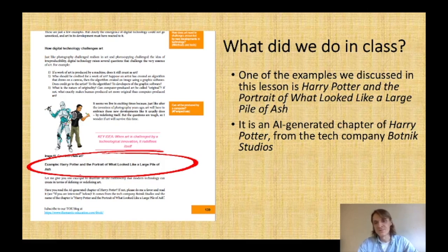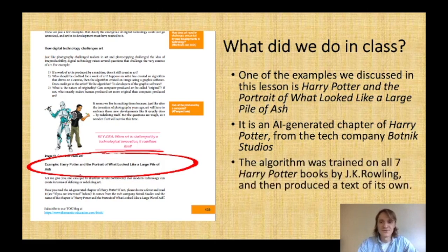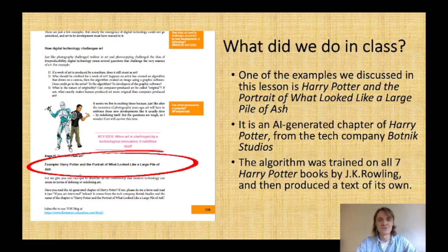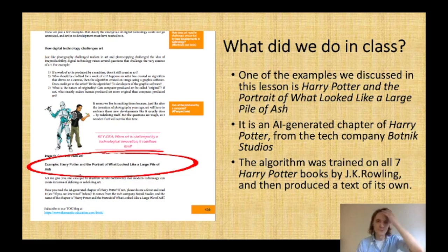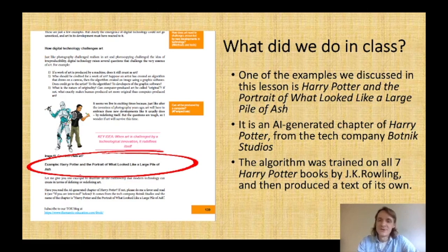I'll put a link to the company and to the chapter in the description below. Essentially, they had an algorithm trained on all seven of Rowling's Harry Potter books — it imitated her style of writing, her sentence construction, and her choice of words. When the algorithm learned from her seven books, it produced a text of its own in the form of this additional chapter. I read it and it's quite hilarious — sometimes very thoughtful, sometimes insightful, sometimes borderline ridiculous, but definitely worth a read.